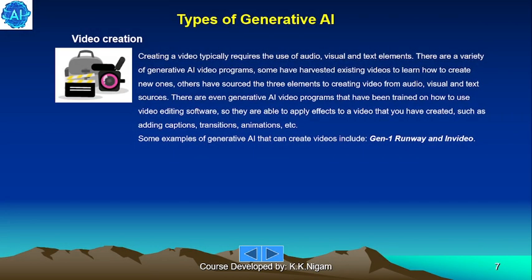Video creation. Creating a video typically requires the use of audio, visual and text elements. There are a variety of Generative AI video programs. Some have harvested existing videos to learn how to create new ones; others have sourced the three elements from audio, visual and text sources. There are even Generative AI video programs trained on how to use video editing software, so they are able to apply effects such as adding captions, transitions, animations, etc. Some examples include Gen 1, Runway and Video.